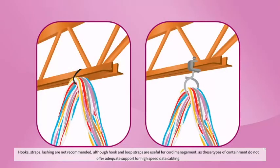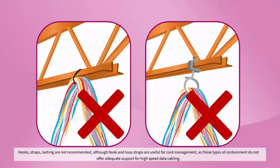Hooks, straps, and lashing are not recommended. Although hook and loop straps are useful for cord management, these types of containment do not offer adequate support for high-speed data cabling.